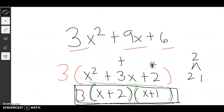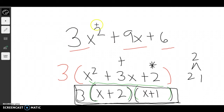The biggest thing that will help most people with this is to treat it as a two-step problem: first, factor out the GCF, and then after you've factored out the GCF, try to factor the remaining expression further.